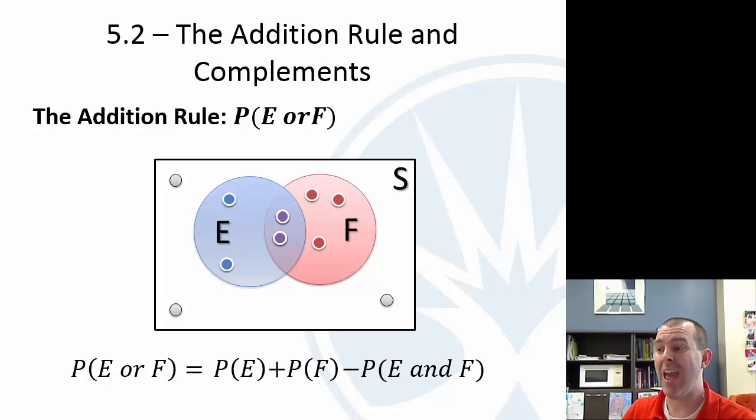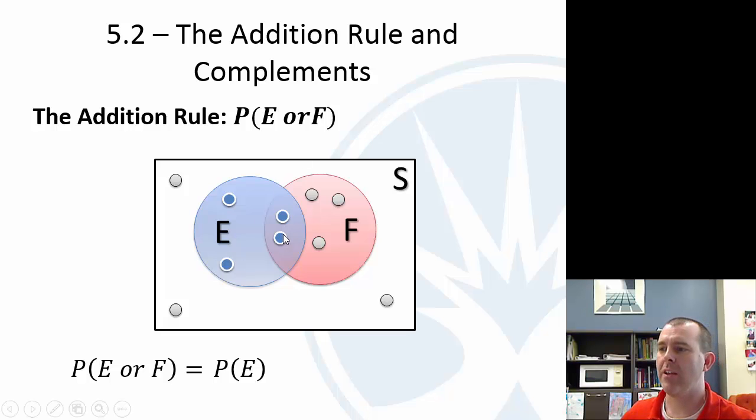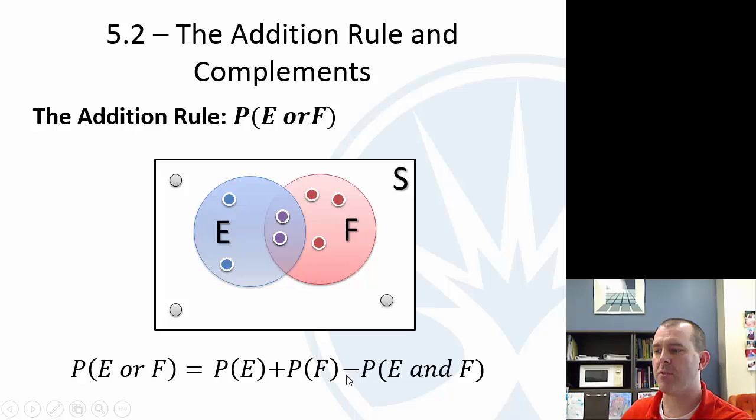So again, we have the probability of E, and my mouse again here highlights. So there's the probability of E, those four events. And then the probability of F is those five events. But we've double counted those two in the middle, so we have to subtract one off. So then they're only counted once.